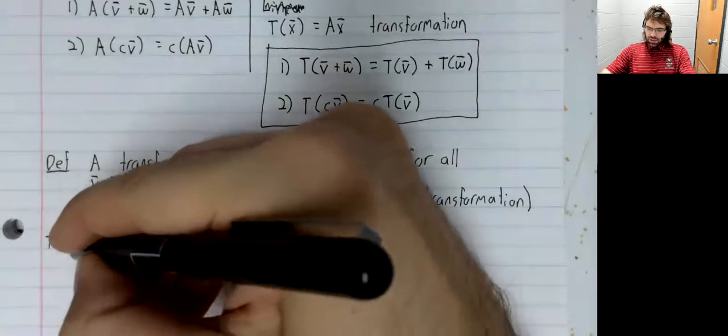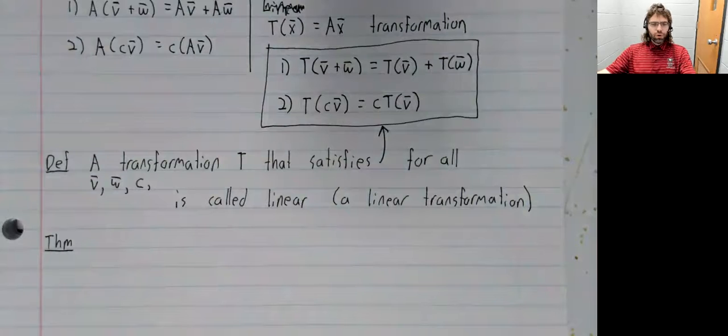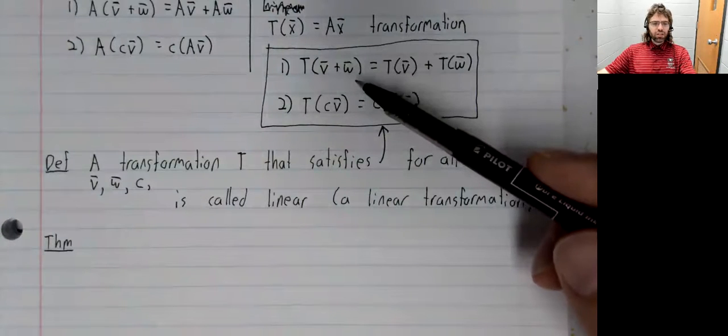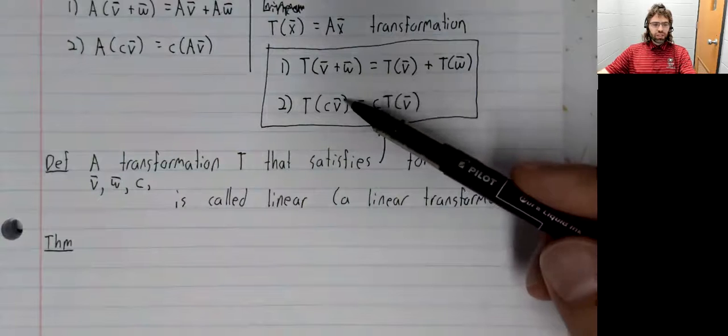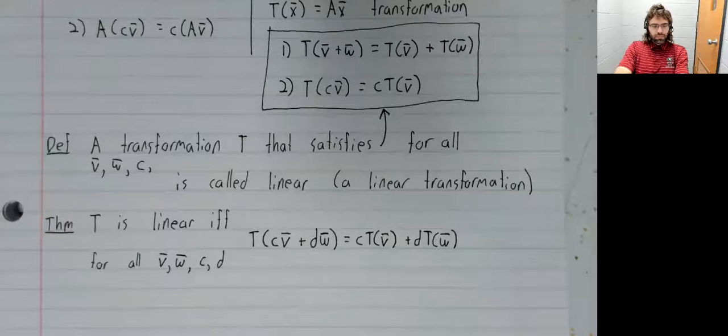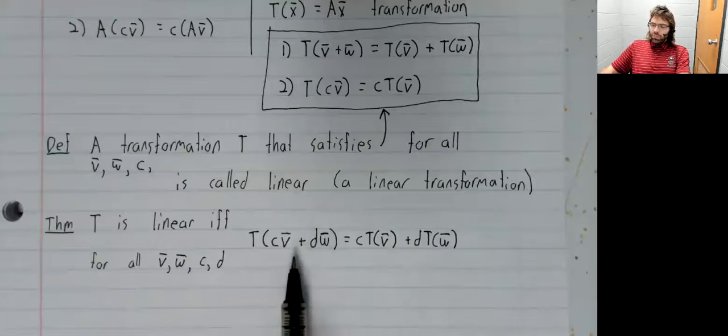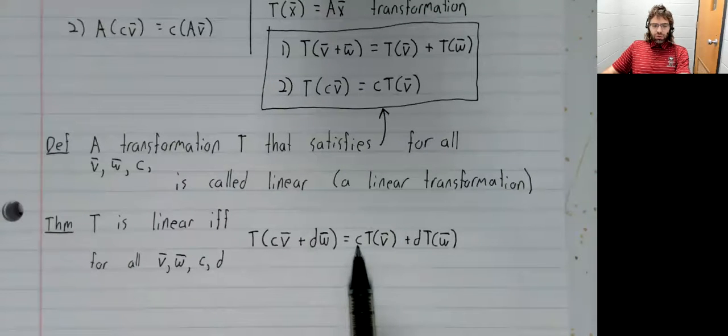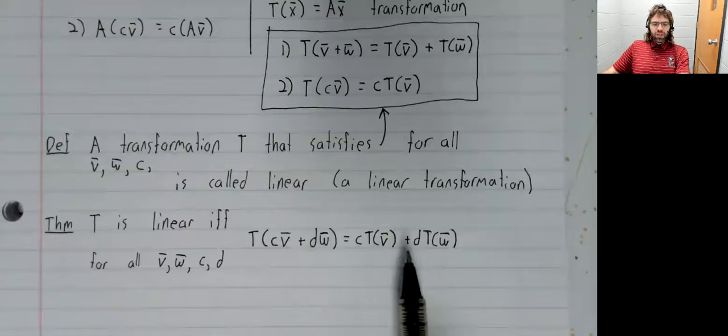Let me end this video with two quick theorems. First of all, this definition can be consolidated from two statements down to one. A transformation is linear if and only if for every pair of scalars c and d and every pair of vectors v and w, the transformation applied to cv plus dw is the scalar c times T(v) plus the scalar d times T(w).